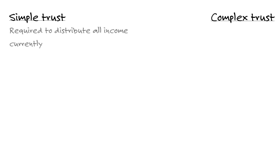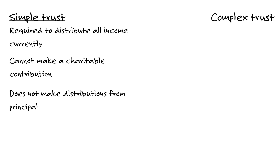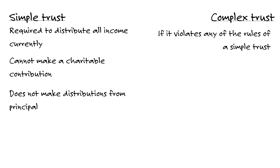Whether a trust is a simple trust or a complex trust affects the taxation of the trust as well as the taxation that will occur to the beneficiaries. A trust is a simple trust if it's required to distribute all its income currently, it cannot make a charitable contribution, and does not make distributions from principal. If a trust is not a simple trust — in other words, any violation — it's then a complex trust.